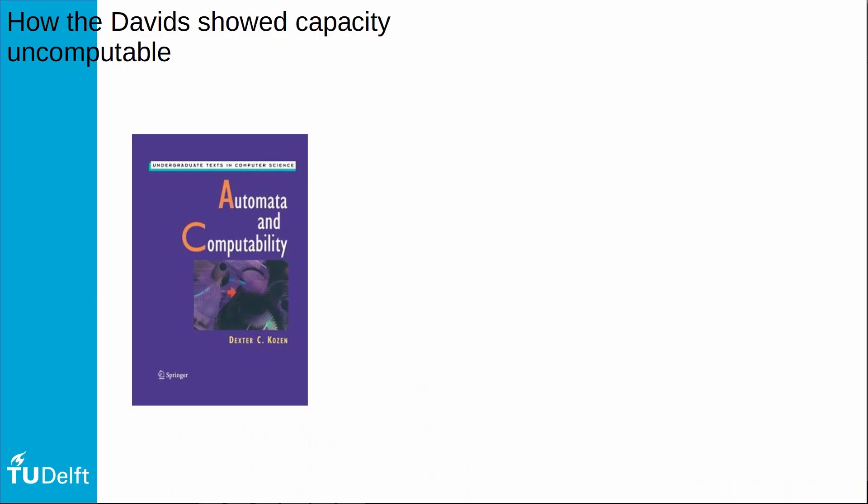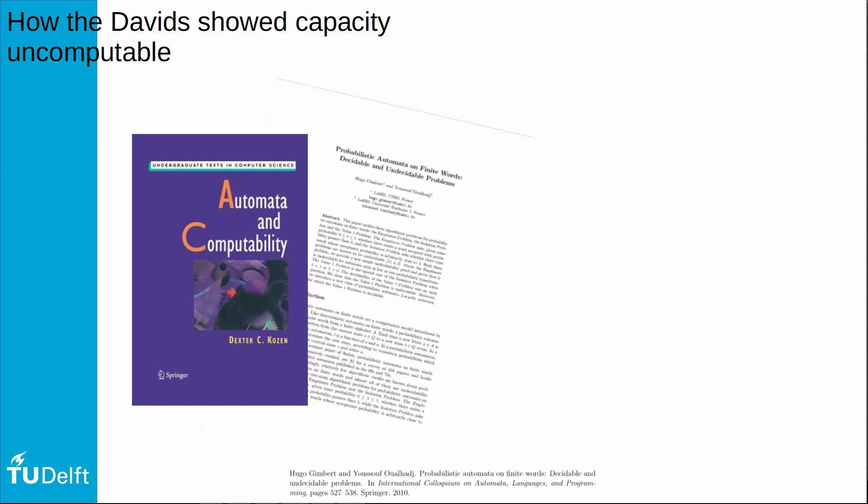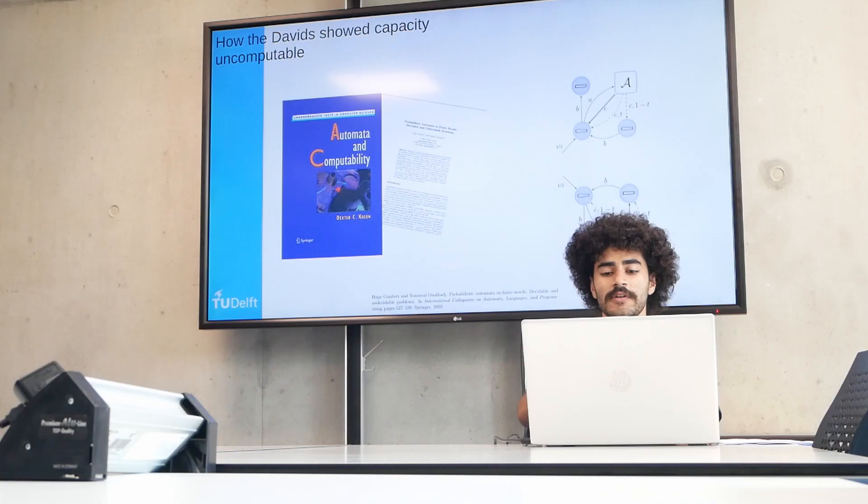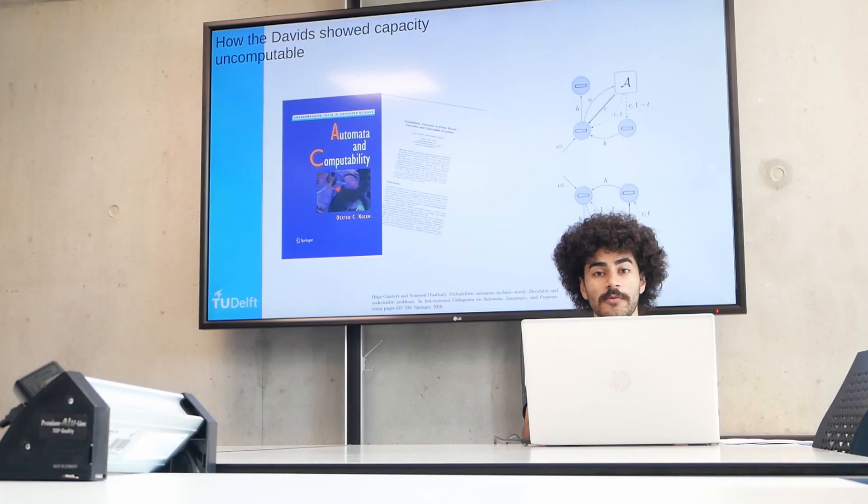They went to the automata theory literature. They found this paper, which had this automaton in it. And this automaton has an undecidable property. So then they define a channel on top of it. And boom, they had a channel with uncomputable capacity.